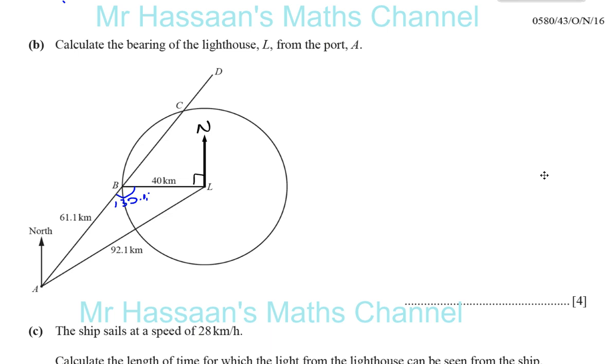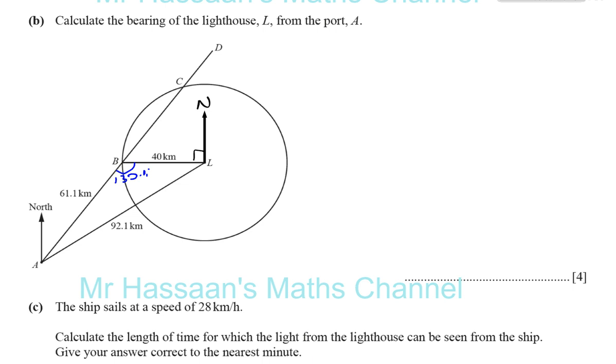In part B of October-November 2016, paper 4, variant 3, this question about this ship that's sailing from the port and past the lighthouse. We already found that the angle here is 131 and we were told that B is due west of L, it's 90 degrees.